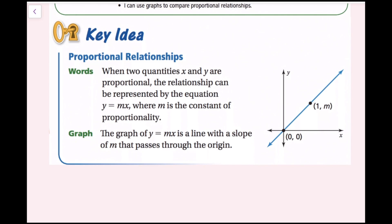The graph of y equals mx is a line with a slope of m that passes through the origin. If you take a look at this graph, we know this is a proportional relationship because it goes through the origin. All proportional relationship graphs will go through the origin.